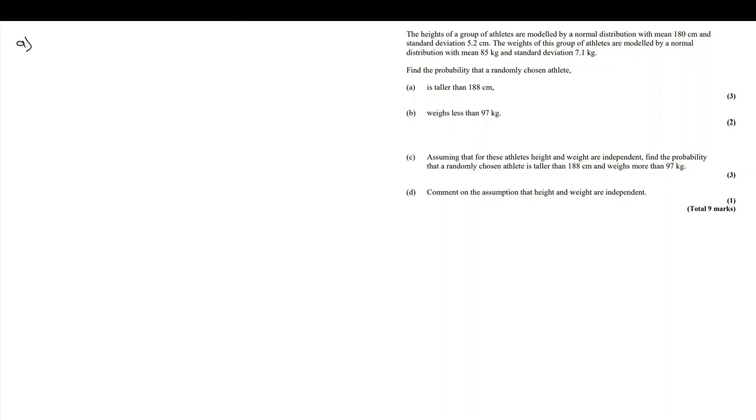Let's start by defining these two distributions, writing it into the normal distribution format. Height is going to follow a normal distribution of 180 for the mean and 5.2 for the standard deviation. Weight, the mean is 85 and the standard deviation is 7.1. Let's get a quick sketch for each of these. The mean is 180 over here on the heights and the mean is 85 over here on the weight.